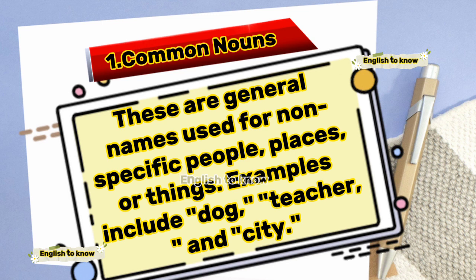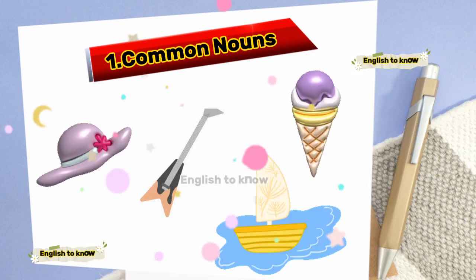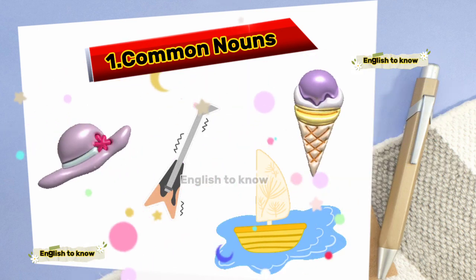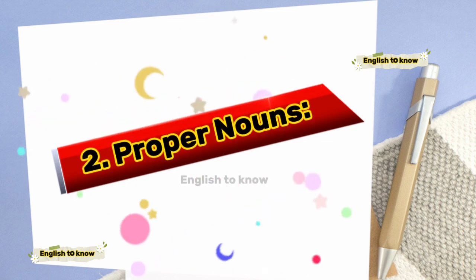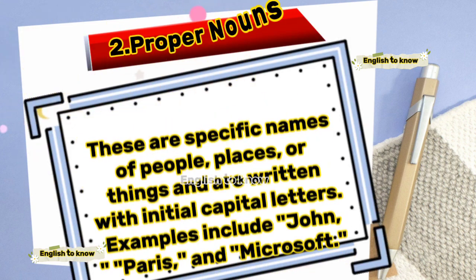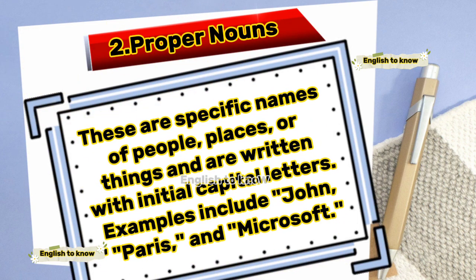Examples of common nouns include dog, teacher and city. Proper nouns are specific names of people, places or things and are written with initial capital letters. Examples include John, Paris and Microsoft.